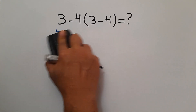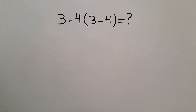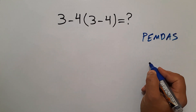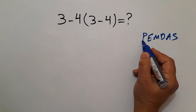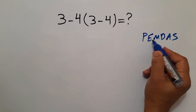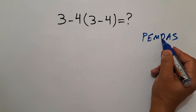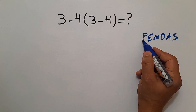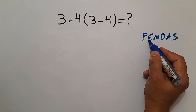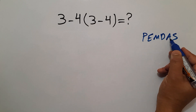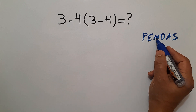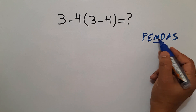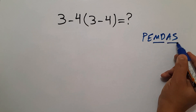Because according to the order of operations, which is PEMDAS: P stands for parentheses, E stands for exponents, M and D stands for multiplication and division, and A and S stands for addition and subtraction. We first do parentheses, then exponents, then multiplication and division, and finally addition and subtraction. Remember that multiplication and division have equal priority and we have to work from left to right. And the same applies to addition and subtraction.